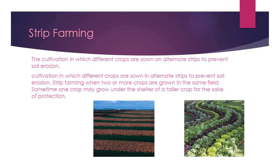This method involves planting broad strips of several crops in the field. Each strip is three to nine meters wide. On slopes, the strips can be laid out along the contour to prevent erosion. The next year, the farmer can rotate crops by planting each crop strip with a different crop.